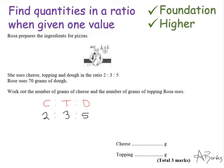Now the information they've given me is that the recipe Rosa uses is 70 grams of dough. So underneath the D here for dough, I'm going to write 70. I need in my new ratio that number to be 70.